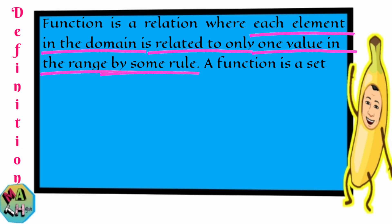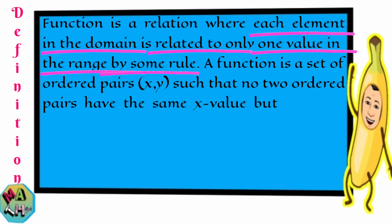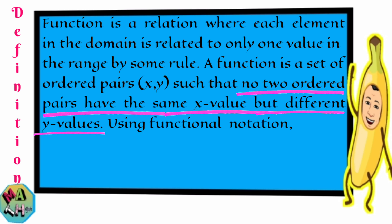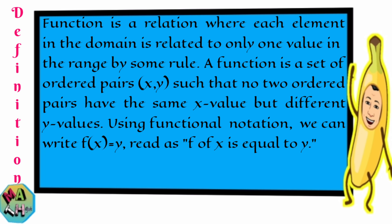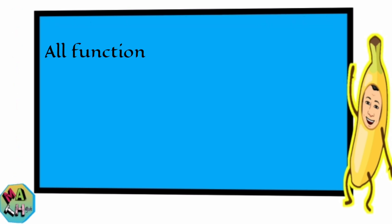On the other hand, a function is a relation where each element in the domain is related to only one value in the range by some rule. So a function is a set of ordered pairs (x, y) such that no two ordered pairs have the same x value but different y values. Using functional notation, we can write f(x) = y, which is the notation of the function in terms of x.